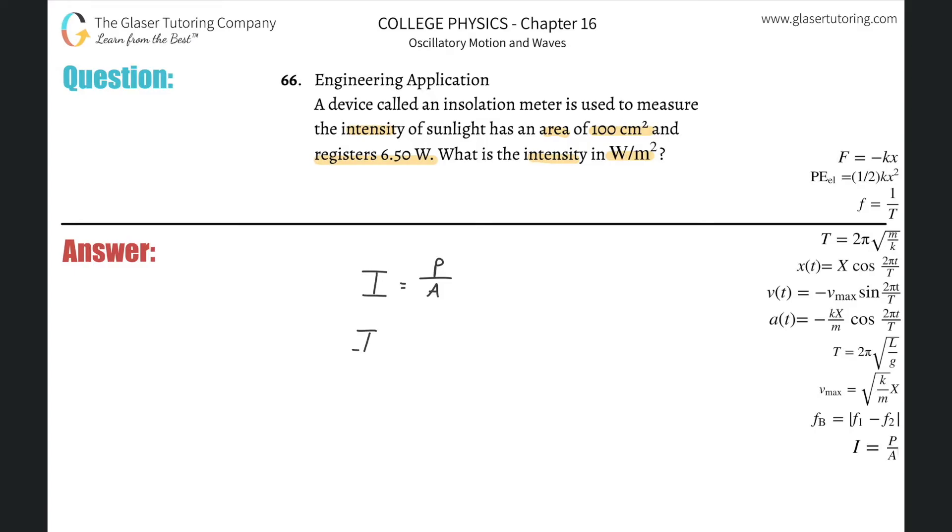So the intensity will then be equal to the power. They told us that the insulation meter is measuring a power of 6.50 watts. You have to know, you got to memorize these units. Whenever you see a watt, you have to know that that means power.